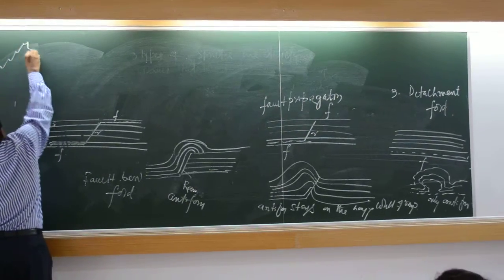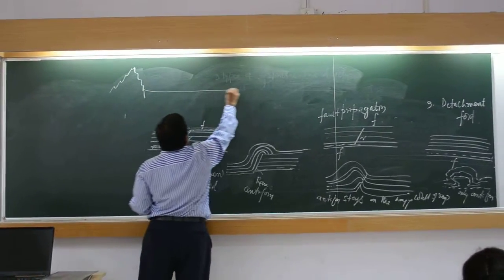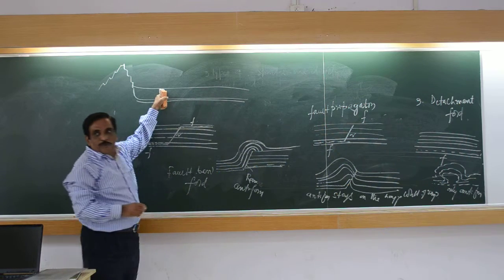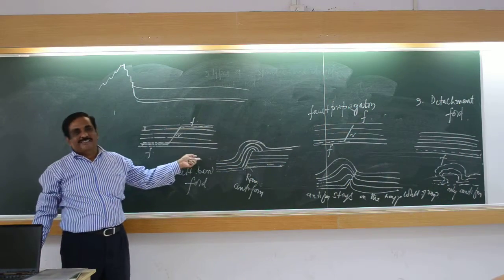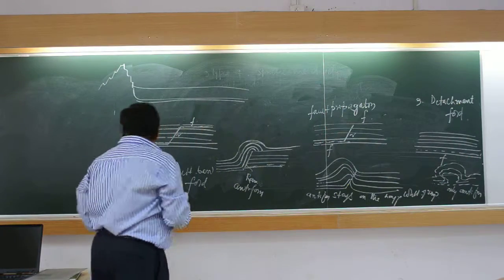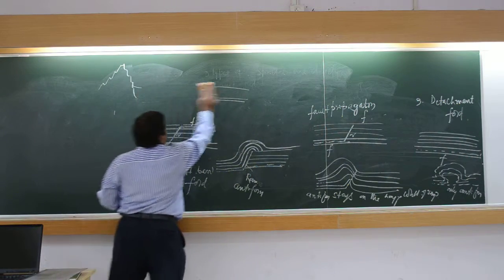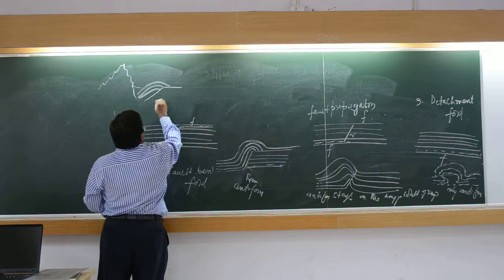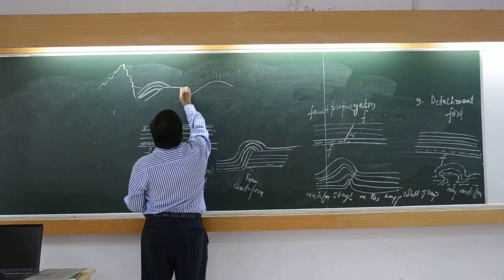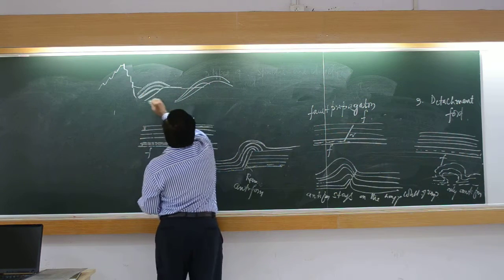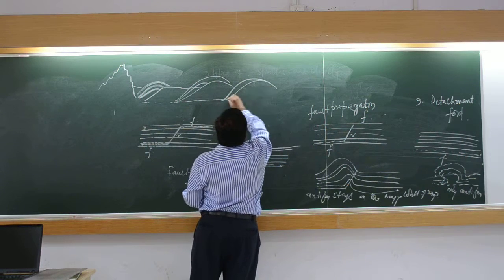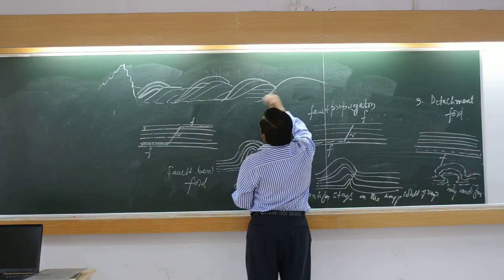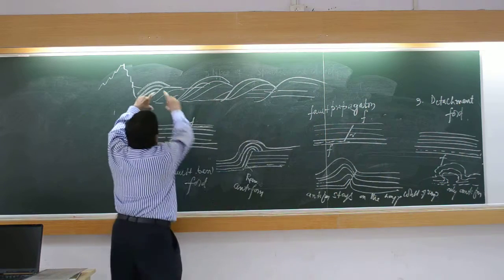So, initially this was Himalaya and this was the foreland basin. The salt bed was here. This is the overlying strata. So now, the general model is to make these structures. All these structures develop over this salt bed. Earlier they are all horizontal beds.